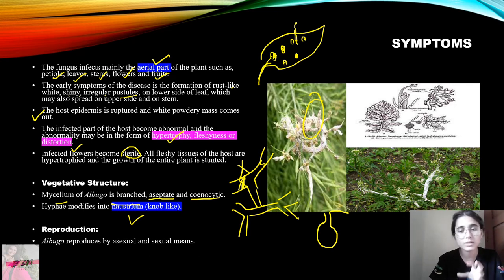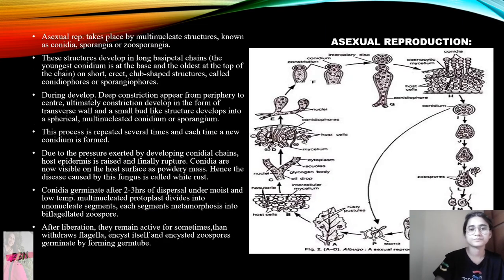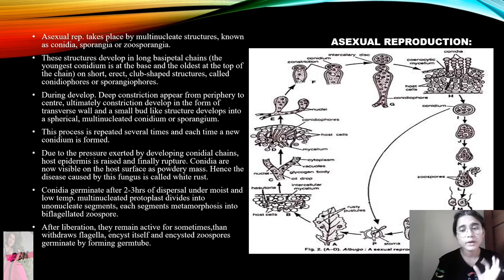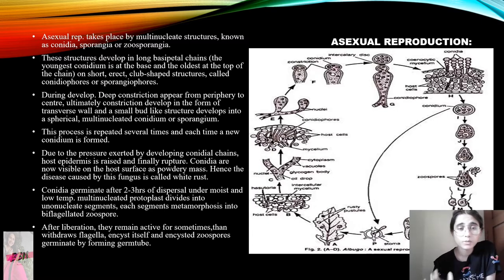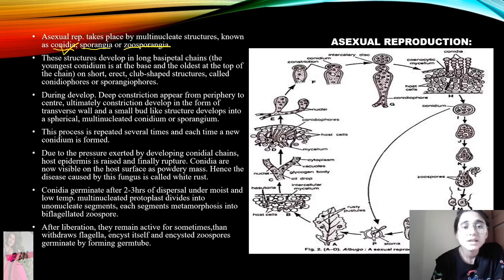Now we will see how asexual reproduction and sexual reproduction take place. Asexual reproduction is very important in Albugo's life cycle and comes up from an examination point of view. Asexual reproduction takes place by multi-nucleated structures known as conidia, also called sporangia. These structures develop in long basipetal chains.